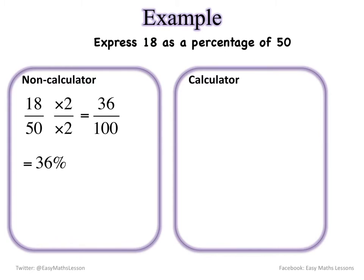On a calculator however, much easier. All I have to do is 18 divide by 50, that gives me 0.36, but because I want a percentage I need to times by 100. So 36%. Easy, huh?